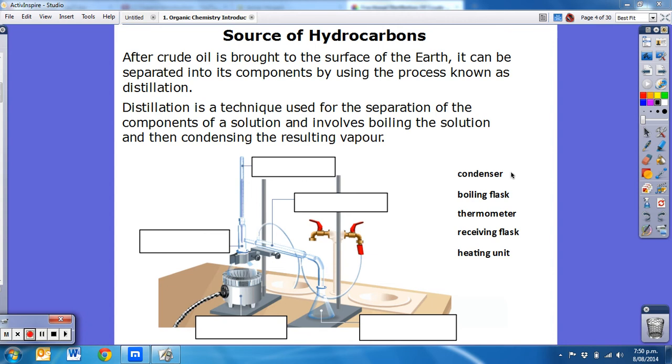Now distillation in the lab is a technique that we use for separating different parts of a solution. So we boil the solution and as the gases come off at different temperatures, they condense back into a liquid which we collect as it's been heated.